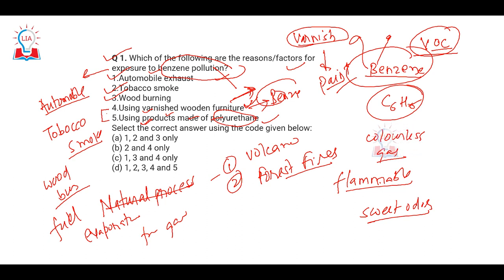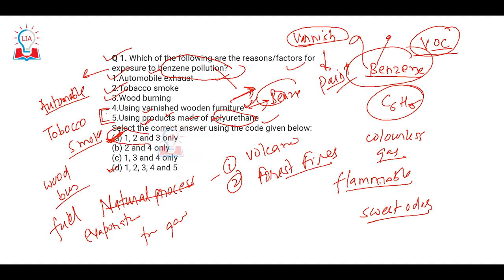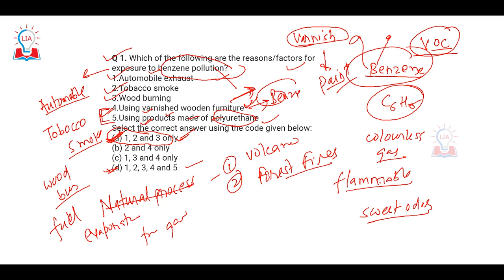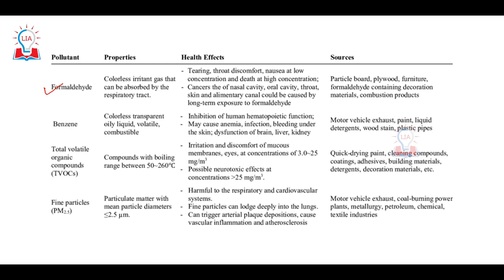According to the UPSC answer key, the correct answer is options 1, 2, and 3 only — not 4 and 5. If I were in the exam, my answer might have been 1, 2, 3, 4, and 5, but we need to honor the UPSC key. In the exam environment, overthinking could lead you to mark 4 and 5 as well. The official UPSC answer is option A — that is 1, 2, and 3.